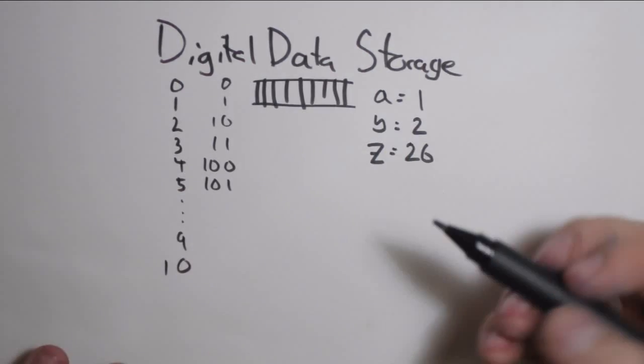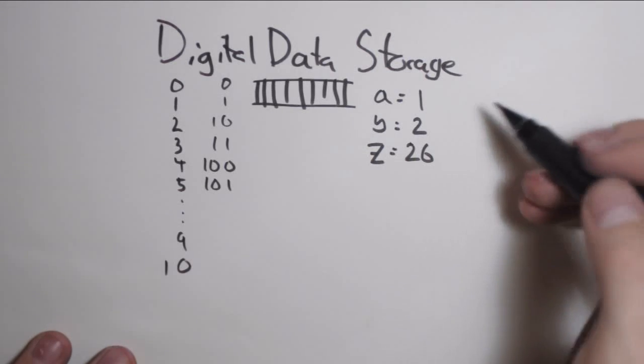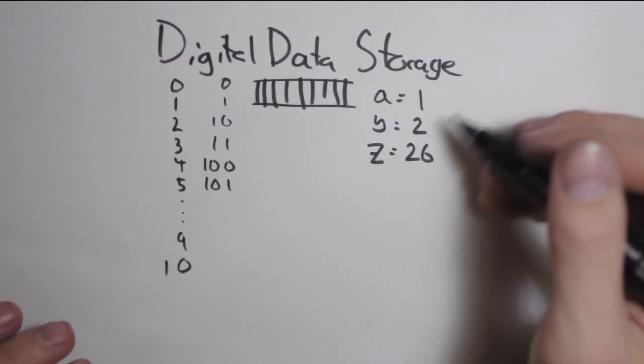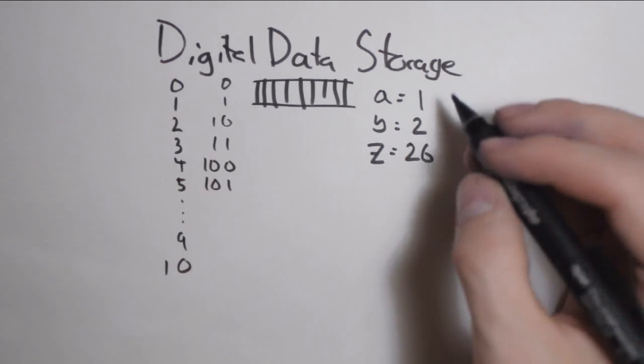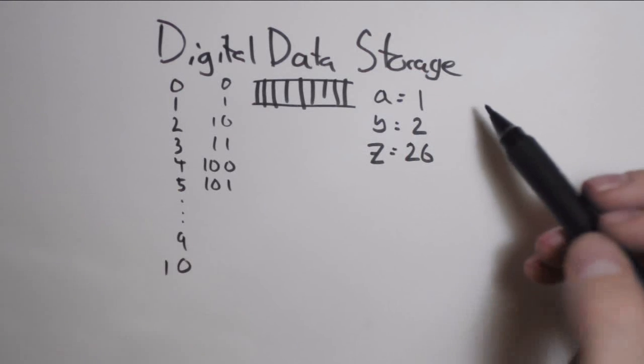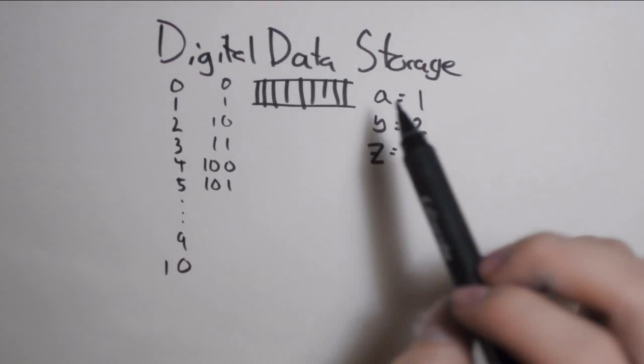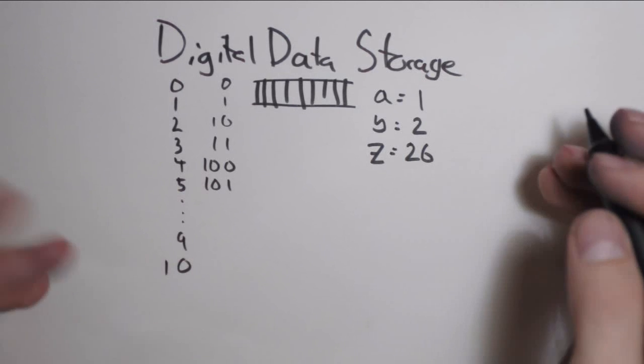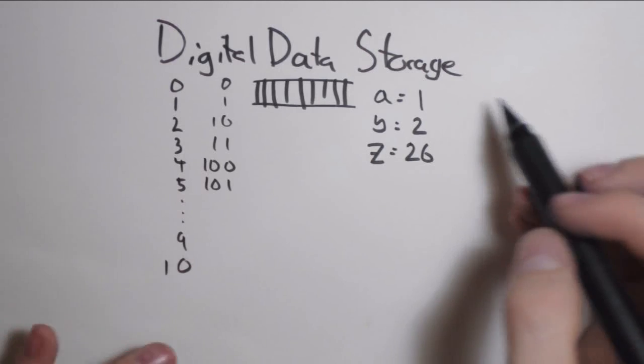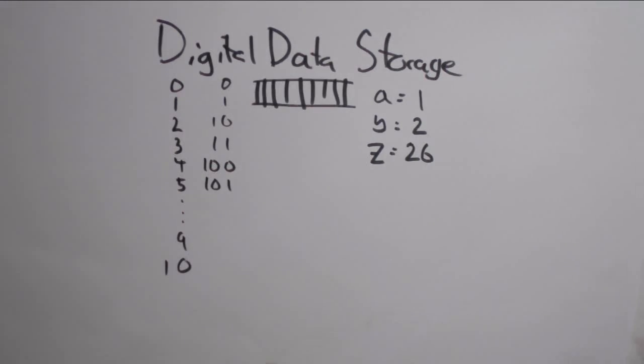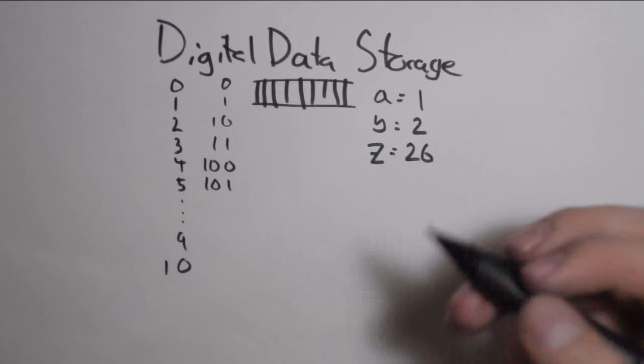It works the same way for capitals. Capital A would, for example, be 27 in this system. It's not exactly like that in ASCII, but basically you've got one number value attached to each symbol or character in text. Plus or minus and stuff like that also have a value attached, and all the numbers also have a value attached to them. You've got just a sequence of numbers stored as bytes that get printed out as text.